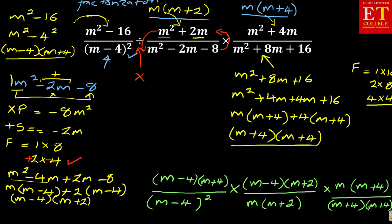Now the next thing to do is cancel. You cancel what is similar. In the first one we have M minus four, and then we have M minus four squared at the bottom — so we take one M minus four from the top to cancel two at the bottom. I've got M plus four on top canceling M plus four at the bottom. I have M plus two canceling M plus two, and M canceling M. So in actual fact, because we have canceled out everything, on top you have a one and at the bottom you have a one. So the answer in this case is one. This entire algebraic fraction simplifies to one.